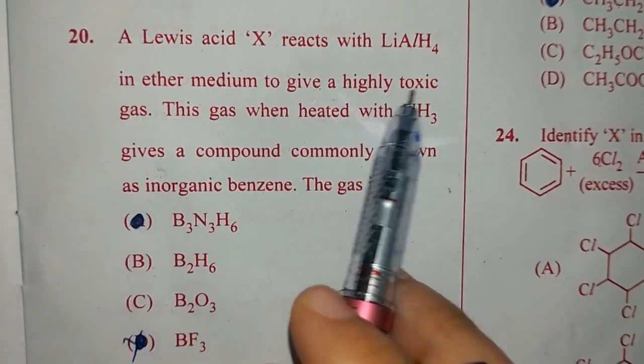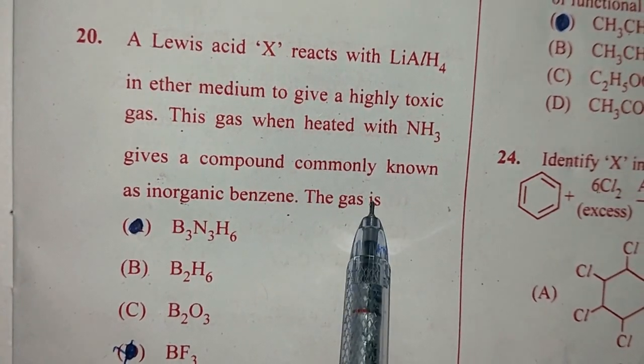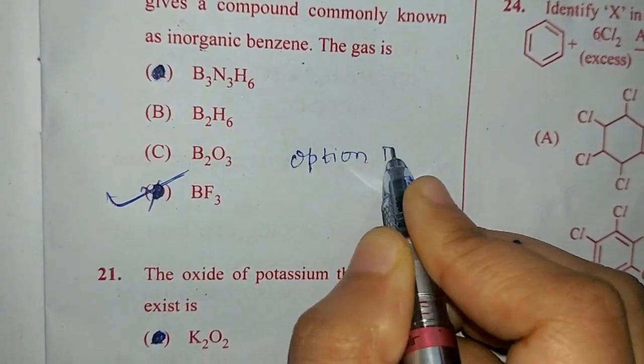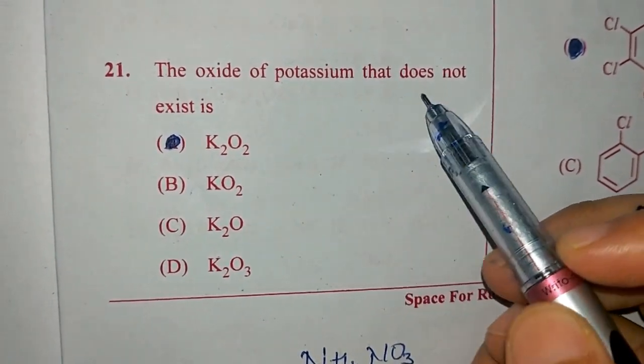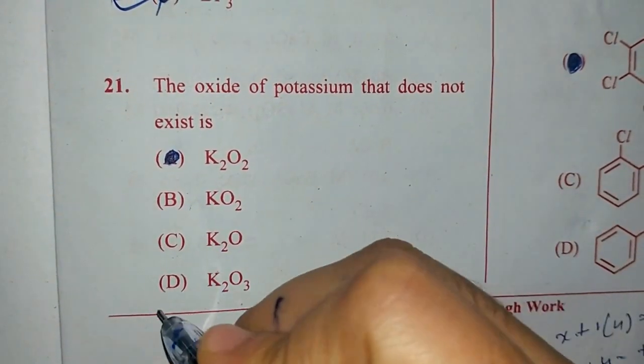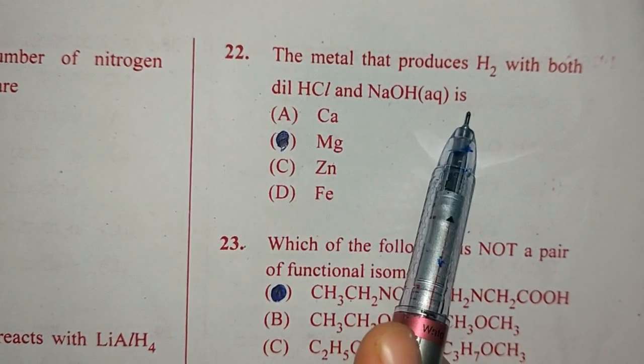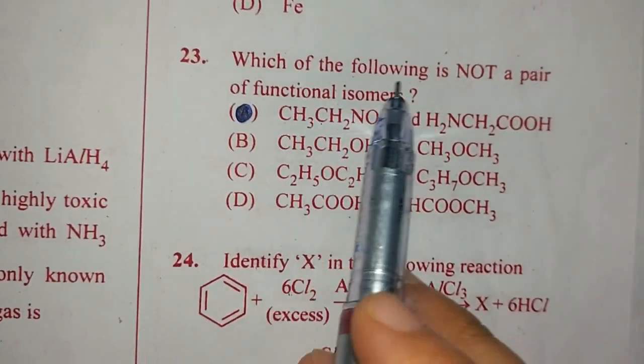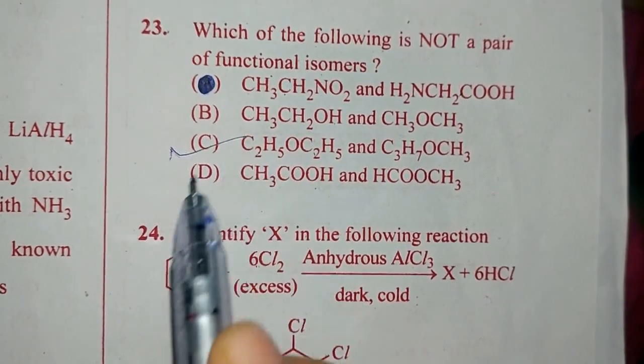Question 20. A Lewis acid X reacts with lithium aluminum hydride in ether medium to give a highly toxic gas and this gas reacts with ammonia to form a compound in organic benzene. The gas is BF3. So answer is option D. Question number 21. The oxide of potassium that does not exist. The answer for this is option D, K2O3. Question number 22. The metal that produces hydrogen with both dilute HCl and NaOH is zinc. That is option C. Question 23. Which of the following is not a pair of functional isomers? So functional group should be different but we see it is the same. It is option C.